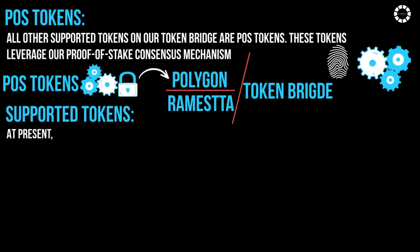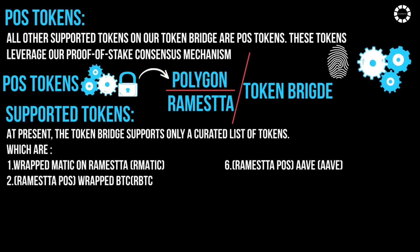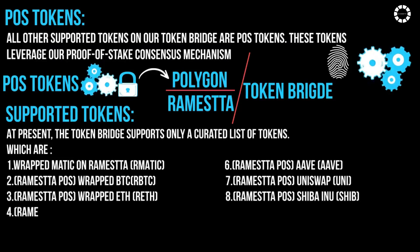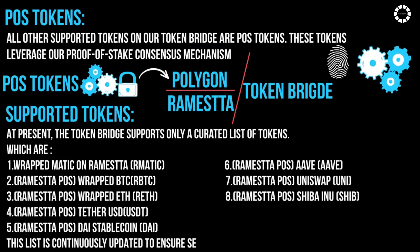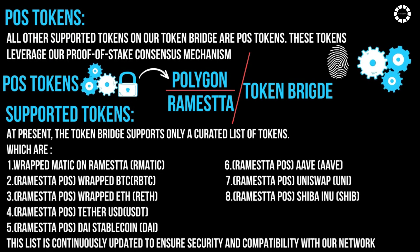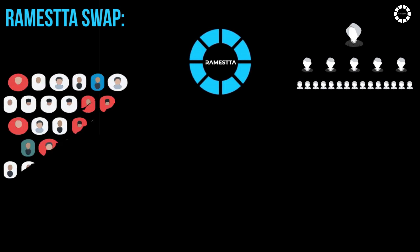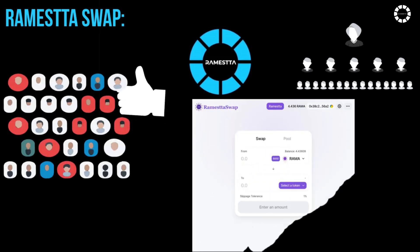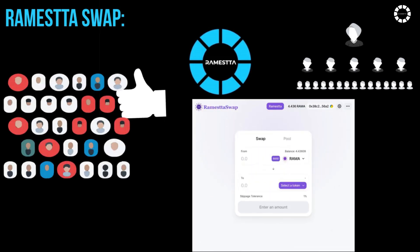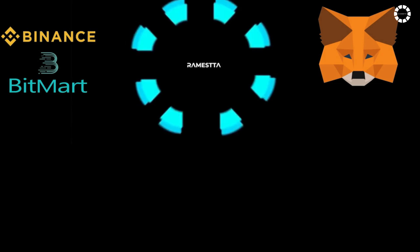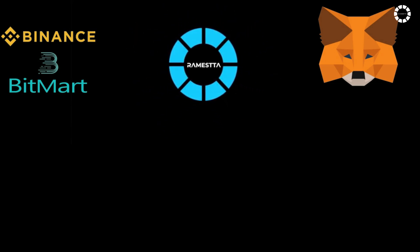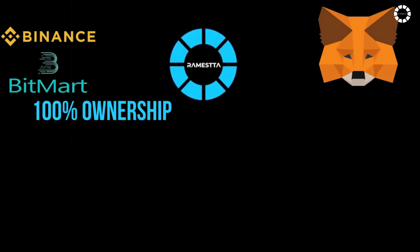At present, the token bridge supports only a curated list of tokens, which is continuously updated to ensure security and compatibility. Romesta Swap is the premier DEX on the Romesta chain, crafted by the Romesta team for the Romesta community. Trade directly from your MetaMask wallet. Unlike centralized exchanges such as Binance or BitMart, Romesta Swap ensures you retain 100% ownership of your crypto throughout the trade.